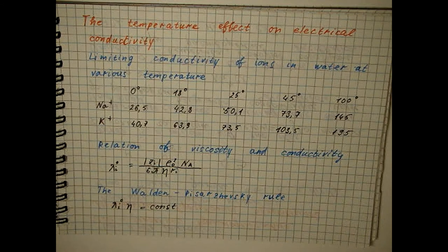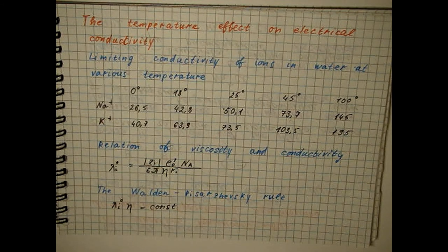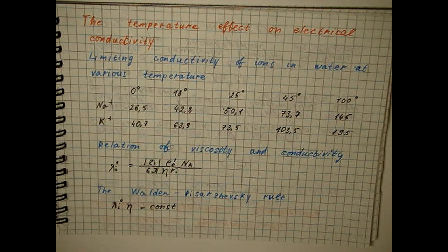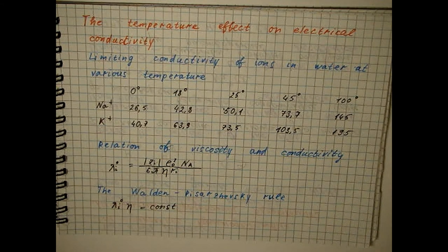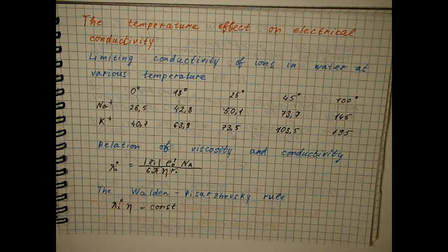The Walden-Pisarzewski ratio to a first approximation is also true for ordinary ions, but in a relatively narrow temperature range, when the temperature change does not significantly affect the strength of the hydration shell, i.e., the radius of the ion does not change.